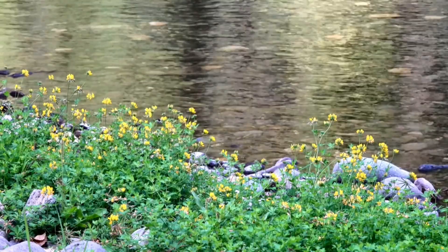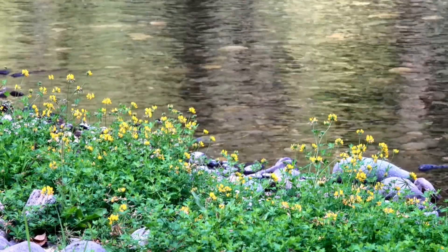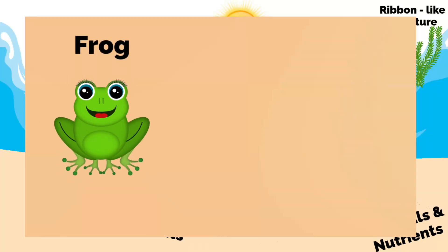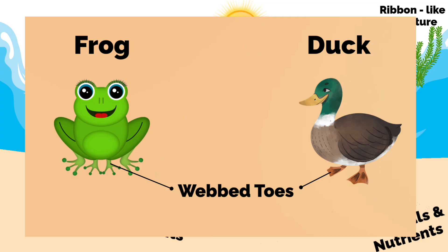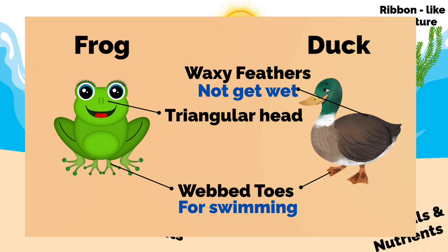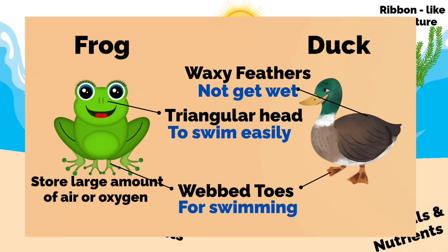We can see a wide variety of animals in these water bodies, all adapted to live in such habitats. Animals like frogs and ducks use webbed toes for swimming. The feathers of a duck are waxy, so they do not get wet. Frogs have a triangular head to swim easily, and they can store large amounts of oxygen to stay longer in water.